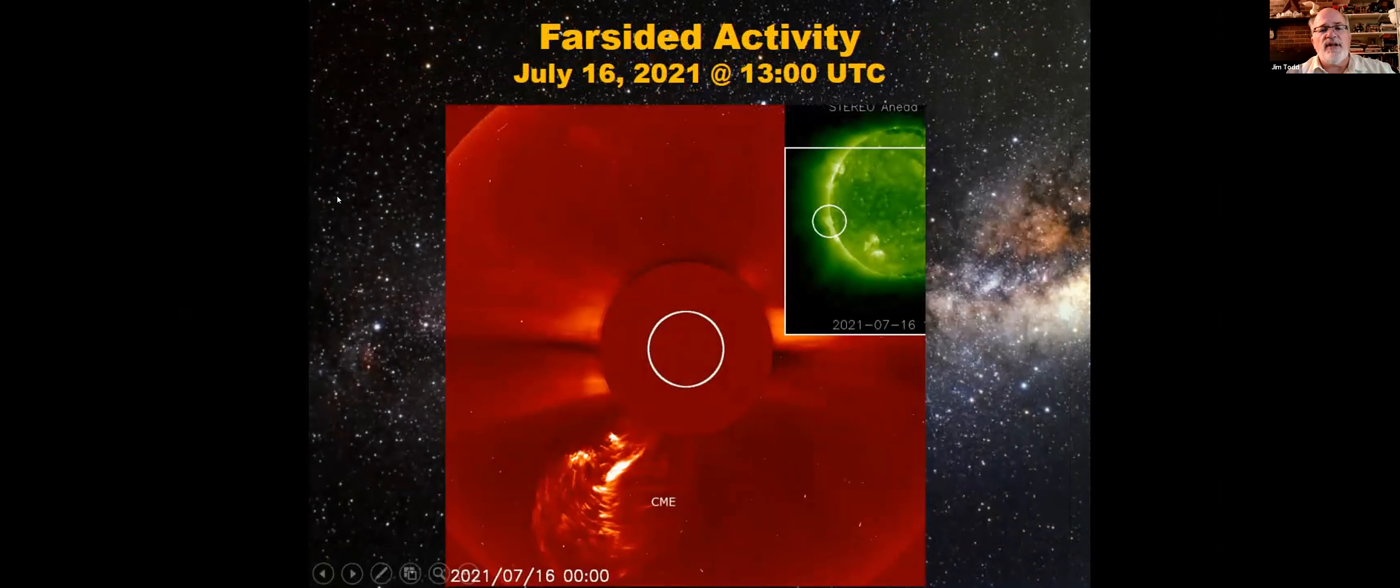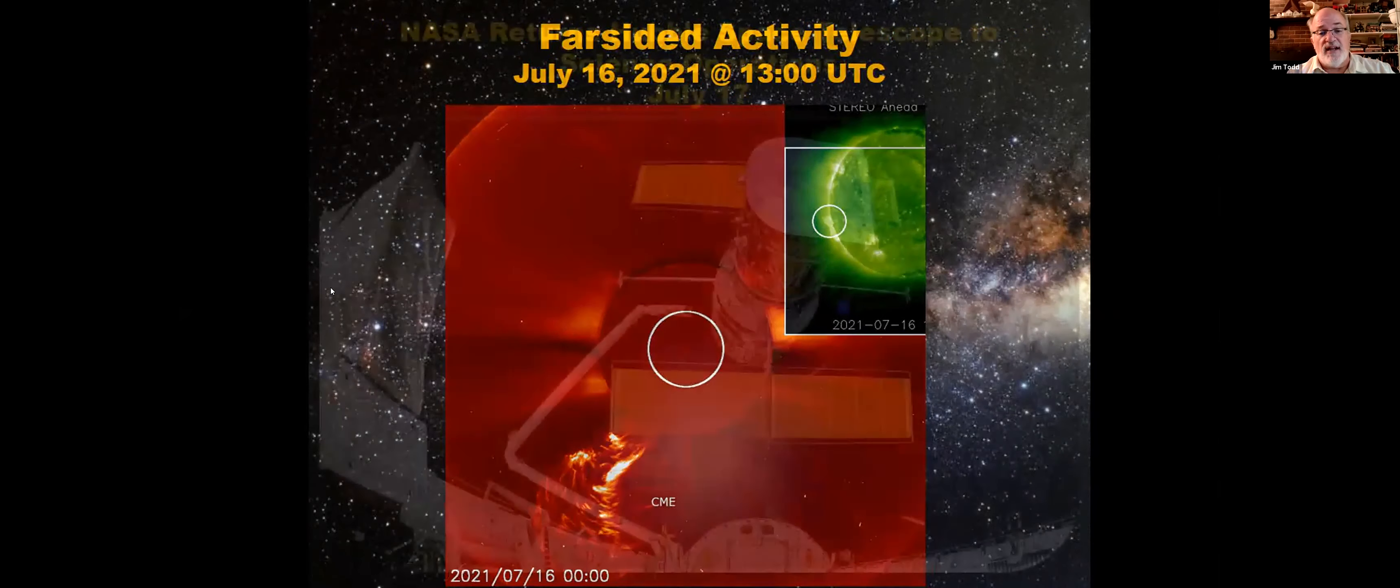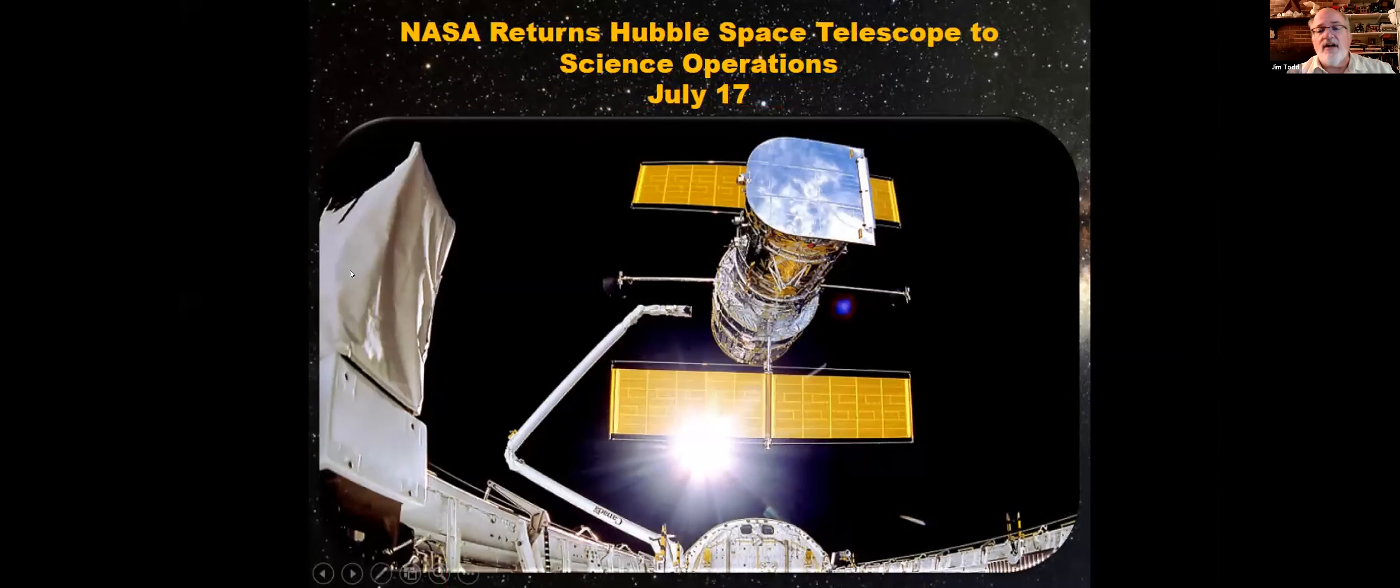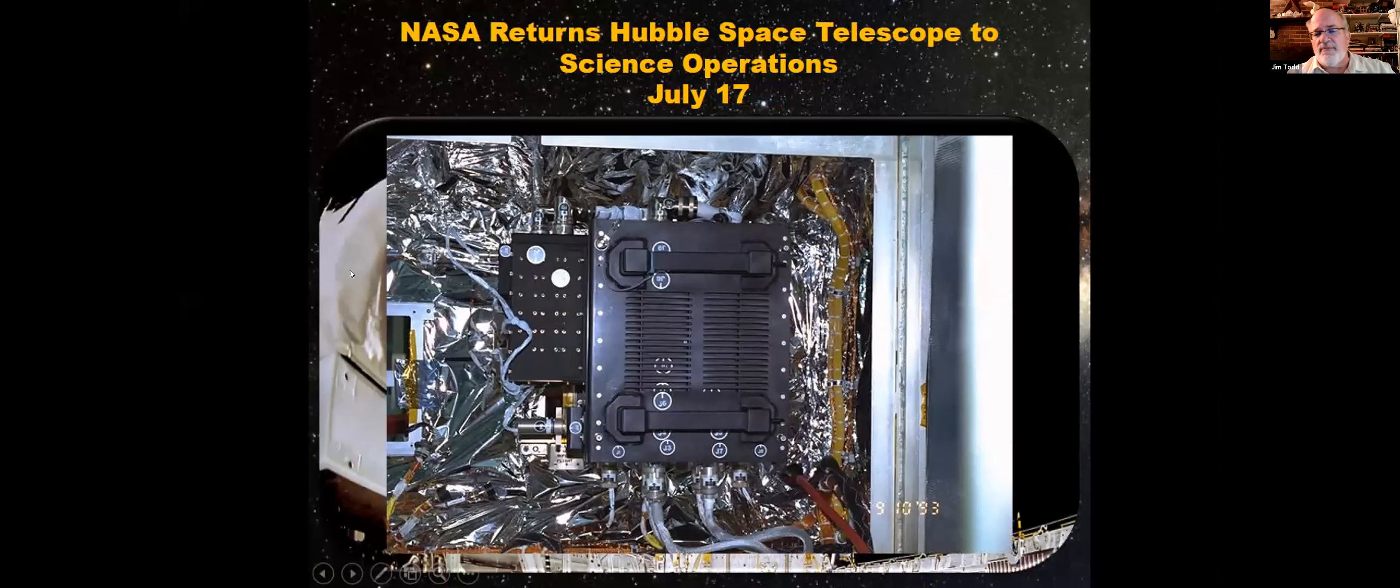On July 16th we had a fairly large coronal mass ejection. Look at that down there in the lower left, that's a massive storm. If anything to be said, cycle 25 is waking up for sure. And just yesterday NASA finally was able to wake up the Hubble computer, the 1990 computer, and use the backup system. The primary system seems to be the power supply that had a problem. So they used the backup and it's back up and running, which to me I'm actually very delighted.